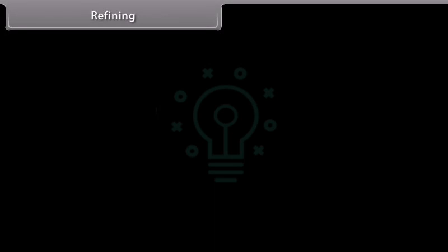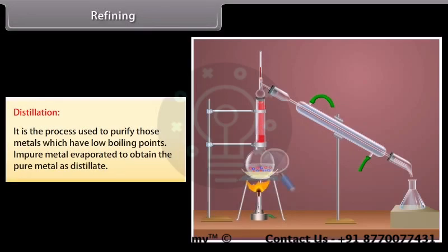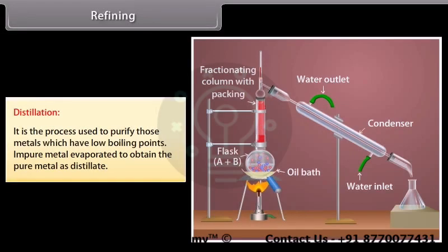Refining. A metal extracted is usually contaminated with some impurity. For obtaining metals of high purity, several techniques are used depending upon the differences in properties of the metal and the impurity. Distillation: It is the process used to purify those metals which have low boiling points. Impure metal is evaporated to obtain the pure metal as distillate. For example, zinc and mercury.